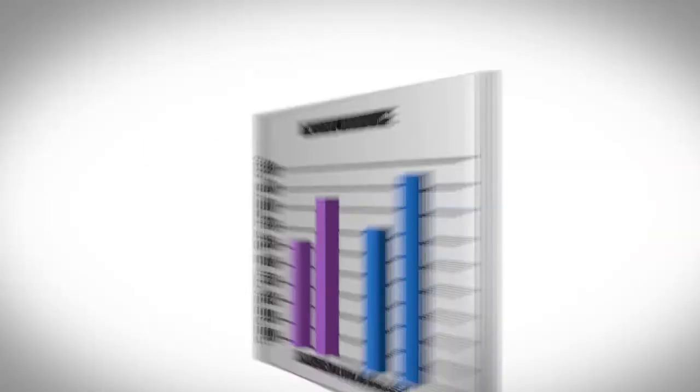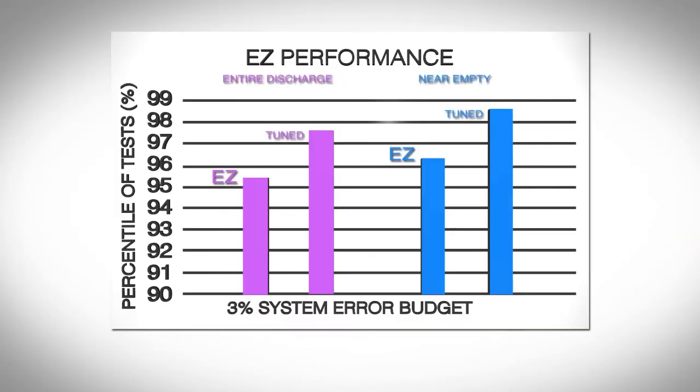If you assume a system error budget of 3% in the SOC prediction, the EZ model passes 95.5% of the entire discharge test cases, very close to the performance of labor-intensive custom models.